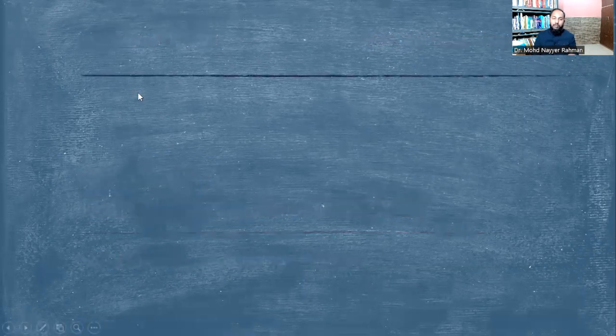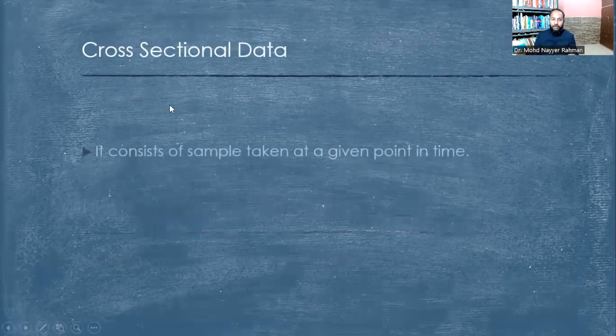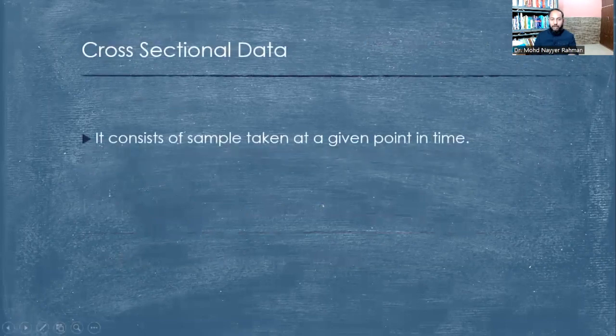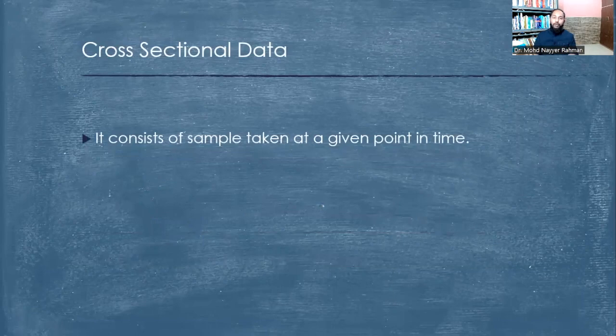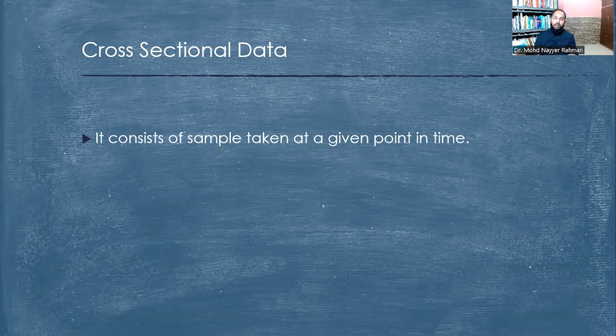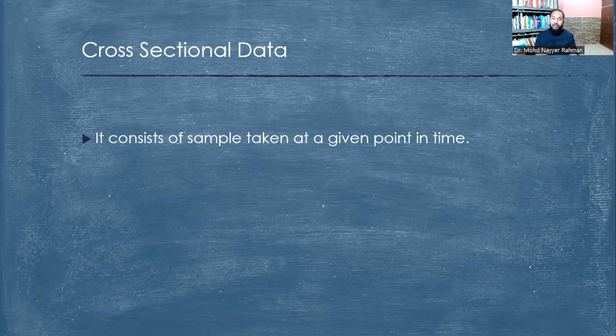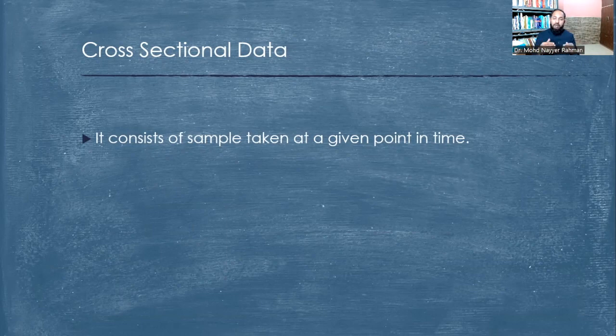We will start with the first type of data, that is cross-sectional data. This type of data consists of samples taken at a given point in time. Suppose today I collect samples of all my family members - what is their income today, for example, or their average temperature today. Because it is at a point in time and is a sample of different people, it will be considered cross-sectional data.